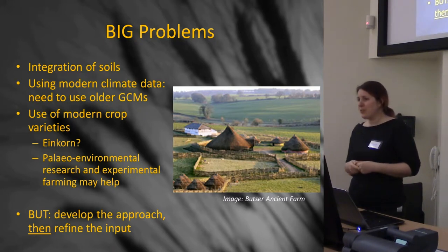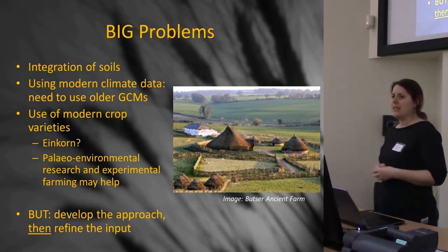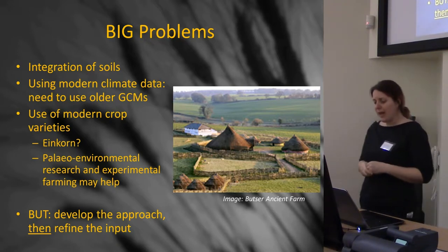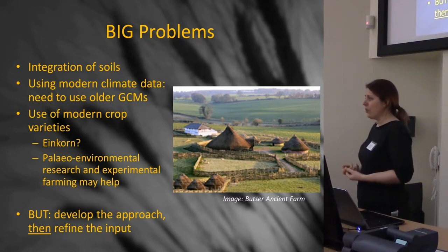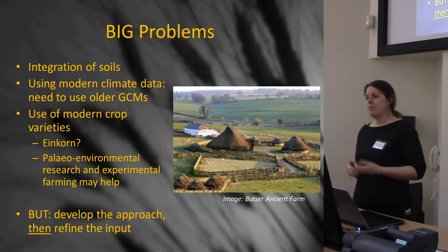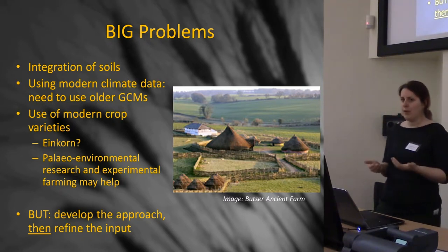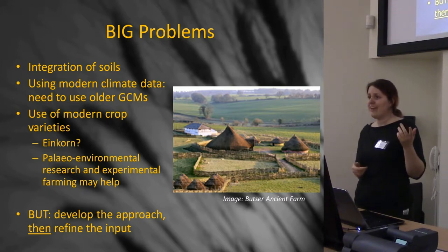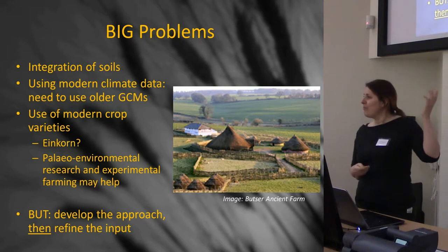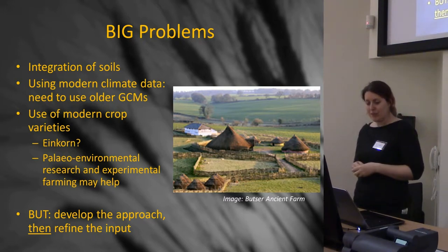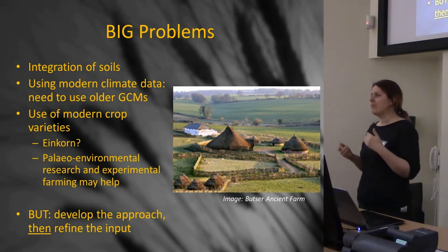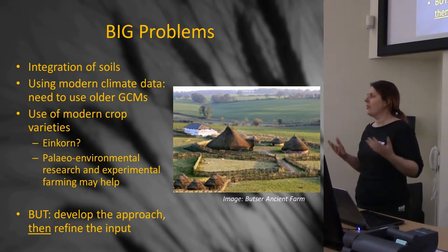The other thing is that crops themselves are not static. The database has so much information about modern cultivars, but it's a problem thinking about what older cultivars were like and what their tolerances would be. At that point, palaeoenvironmental work and experimental farming might actually help us get more information. Turns out einkorn, one of the oldest ones, is actually seeing a resurgence — apparently it's fairly low in gluten. My view is that even without perfect datasets, if we've come up with the model and approach, once you've got the inputs you can apply them.